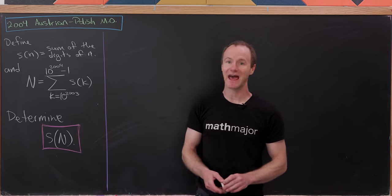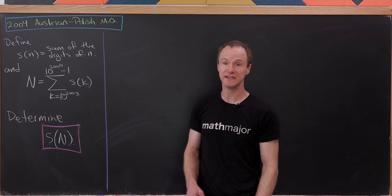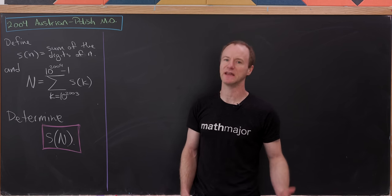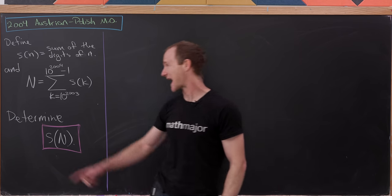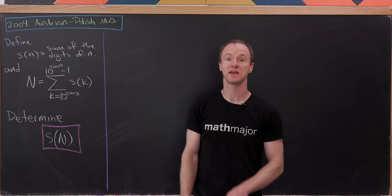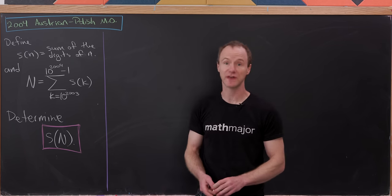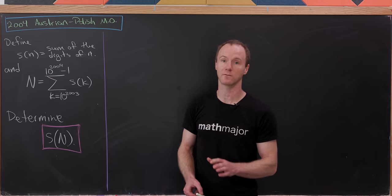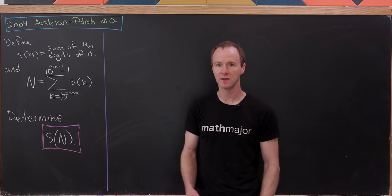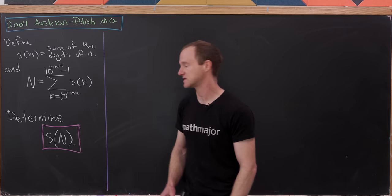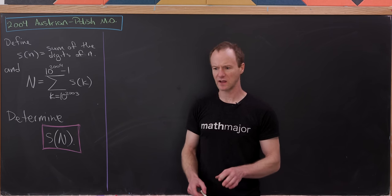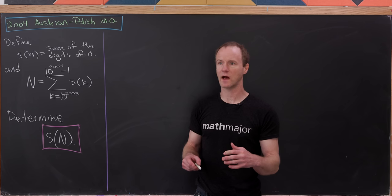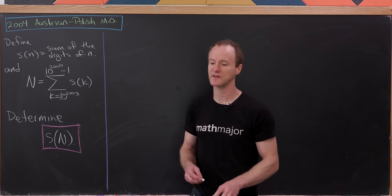Let's define S(n) to be the sum of the digits of the natural number n, expressed in base 10. We'll set capital N equal to the sum as k goes from 10^2003 all the way to 10^2004 minus 1 of S(k). Our goal is to determine S(N) — so we have a composition of this function S with the sum of values of S.